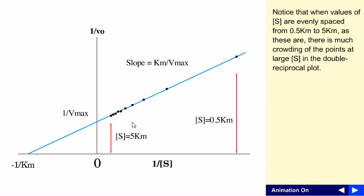At large substrate concentration in the double reciprocal plot. When the substrate concentration is larger, we are having these values really crowding at a particular place in this double reciprocal plot.